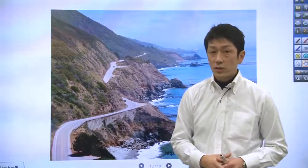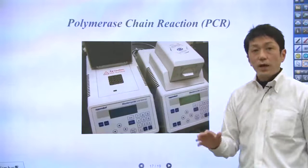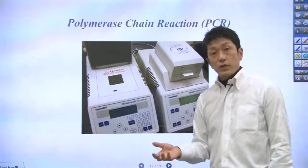For this idea, Dr. Mullis was awarded the Nobel Prize in Chemistry in 1993. That is the polymerase chain reaction, or PCR. PCR has made it possible to amplify specific genes millions of times. It has been used in various applications.